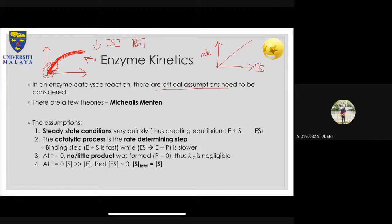There are a few theories people can use for enzyme kinetics, but the theory we're going to look at today is the Michaelis-Menten kinetics theory, which was derived a long time ago. There are assumptions that scientists use when they try to analyze or generalize enzyme kinetics.